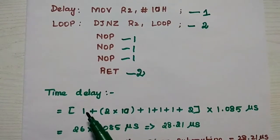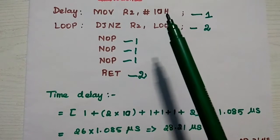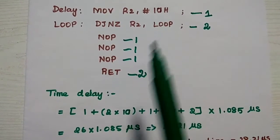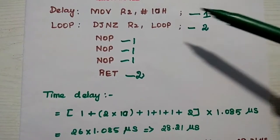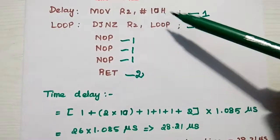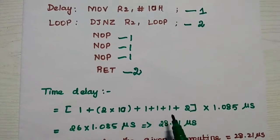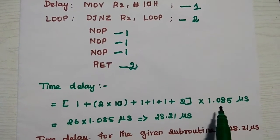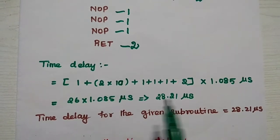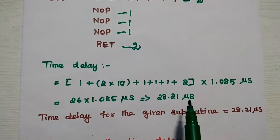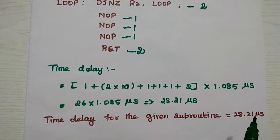The total time delay equals the sum of all machine cycles multiplied by the machine cycle period. We calculate: 1 + (2 × 10) + 1 + 1 + 1 + 2, all multiplied by 1.085 microseconds. The immediate data value 10h (16 decimal) is multiplied with the DJNZ instruction's machine cycles. This gives 26 × 1.085 microseconds = 28.21 microseconds. So the total time delay from this subroutine program is 28.21 microseconds.